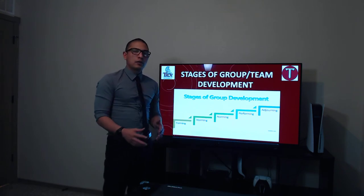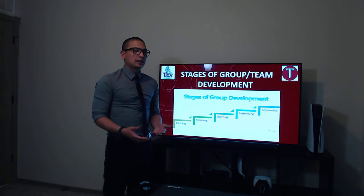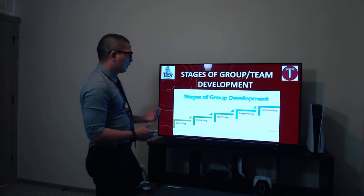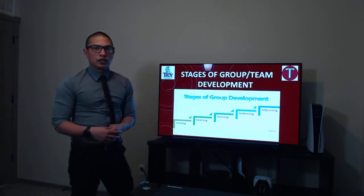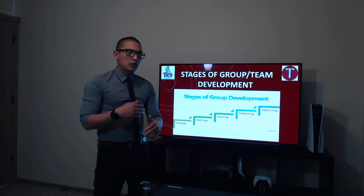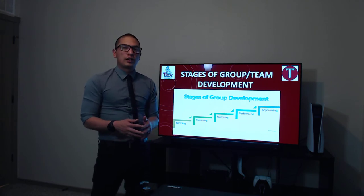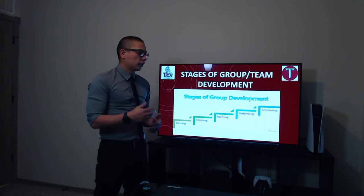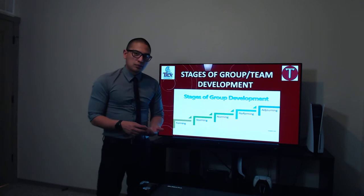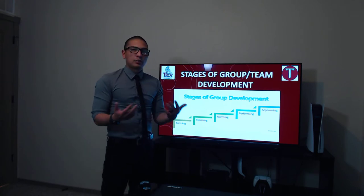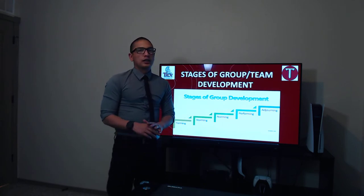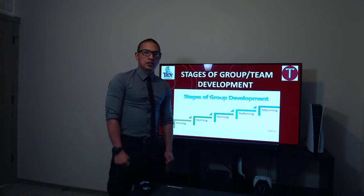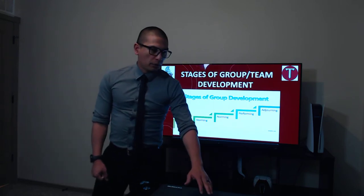The norming stage is where everybody feels comfortable, everybody trusts each other, and they know the roles in the group and team. Then they move forward into the performing stage, where they start functioning like a machine — everybody knows their role and what they need to do. Finally, once the goal has been met, they adjourn, go their separate ways, give high fives, and celebrate their success.